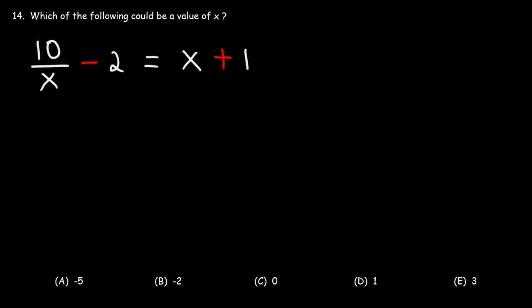Number 14, which of the following could be a value of x? So we have a rational equation, 10 over x minus 2 is equal to x plus 1. How can we calculate the value of x?